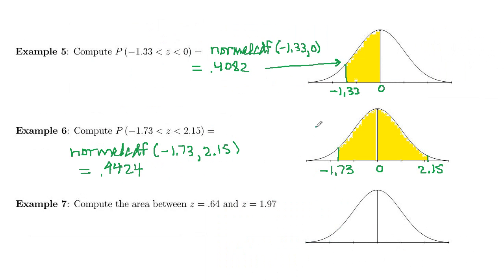So the area in between those values is 0.9424. That's also the probability that a random z-value would be between a z-score of negative 1.73 and 2.15. And that also means that 94% of the data will be contained between those two z-values if we generated z-scores for all the data.